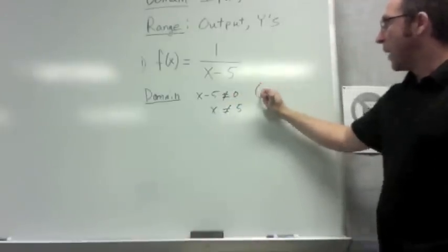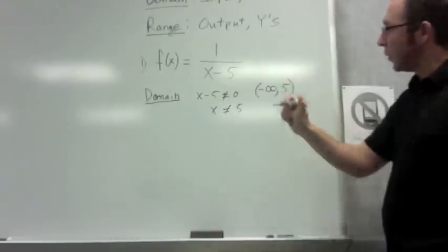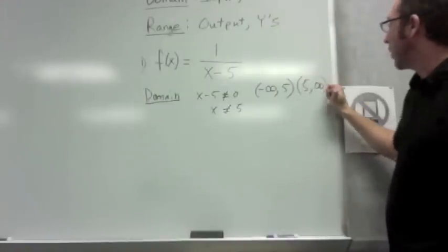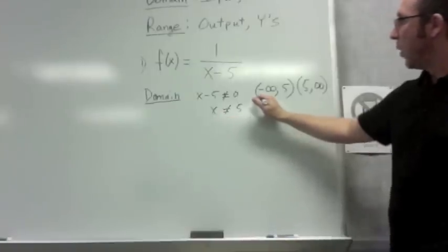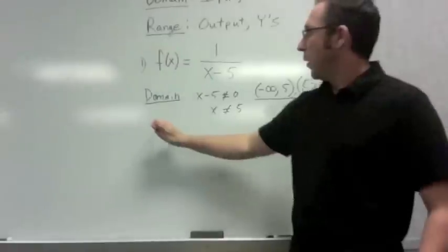So for the domain, anything would work from negative infinity up to but not including 5. And anything 5 or greater would also work. We're only skipping over the 5. So all real numbers except 5 or you could write it in interval notation like that for the range.